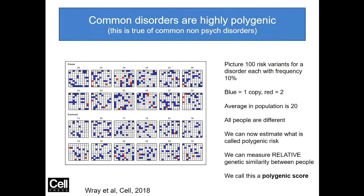Even with only 100 risk variants, there are enough ways of filling in those squares for every single person in the world to be different. So no two patients are identical in terms of their risk genetics. Even with only 100 risk genes, the average person in the population - not the average person who has schizophrenia - has 20 of them. And statistically there is no one who has none. Multiply that up by a factor of ten - there are at least 1,000 risk genes, not 100. So the average person probably has about 200 of these things.